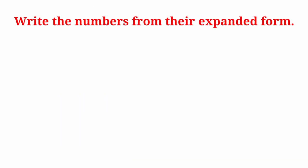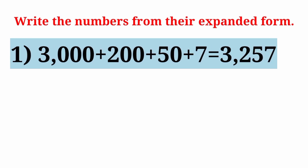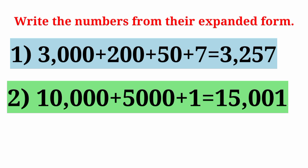Next, write the numbers from their expanded form. Expanded form is 3,000 plus 200 plus 50 plus 7. Number will be 3,257. Next expanded form: 10,000 plus 5,000 plus 1. Number will be 15,001.